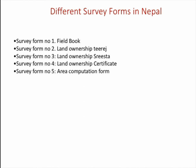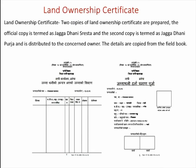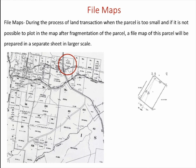Survey forms used in Nepal: Form 1 is the field book, Form 2 is the land ownership tharis, Form 3 is the Shresta kept in the district land revenue office, Form 4 is the ownership certificate given to the land owner, and Form 5 is the competition form. The ownership certificate is also called Lal Purja, and the official copy kept in the district land revenue office is called Jagadahani Shresta, while the copy given to the owner is called Jagadahani Purja. Details are copied from the field book.